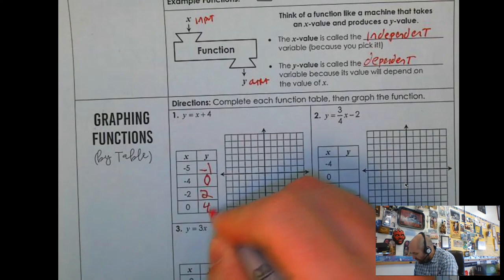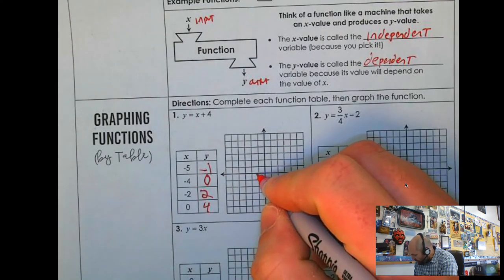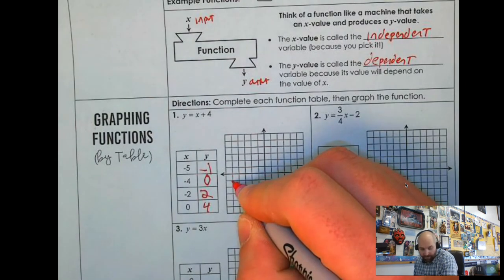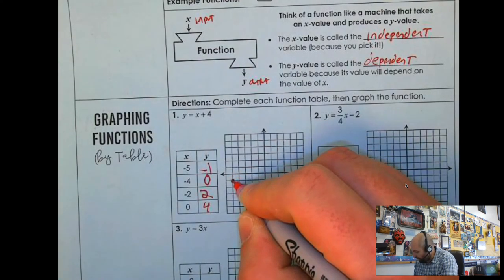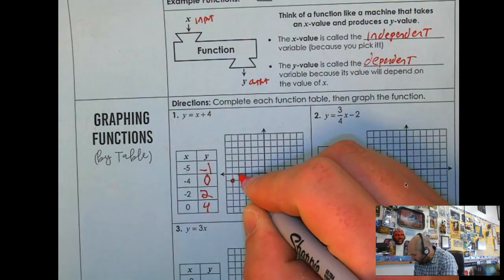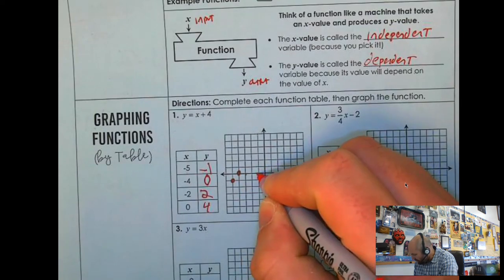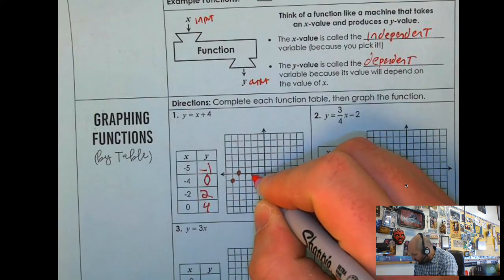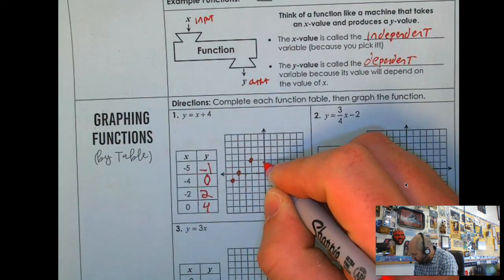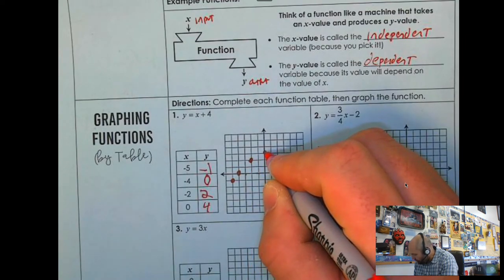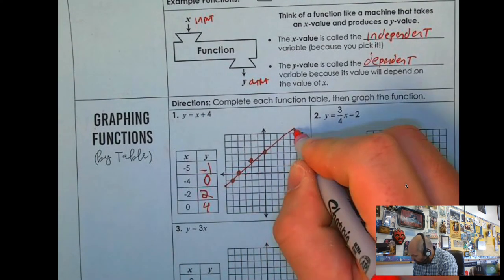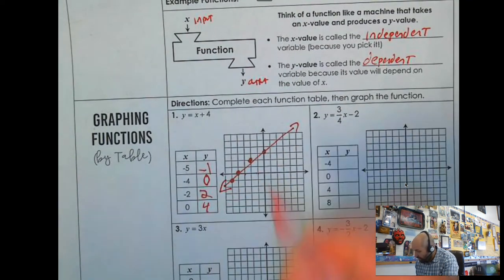And then I'm going to plot this. So negative 5, 1, 2, 3, 4, 5, down 1, put a dot. No problem. Negative 4, 1, 2, 3, 4, stay put. Back 2, 1, 2, up 2, put another dot. Stay put at 0, go up 4, 1, 2, 3, 4. And then I can draw a line. That's how that one works.